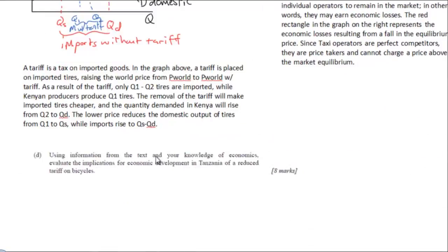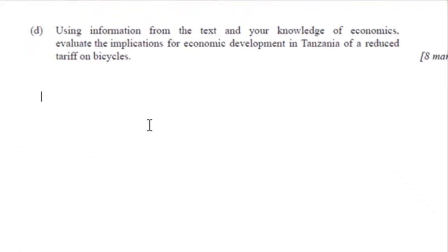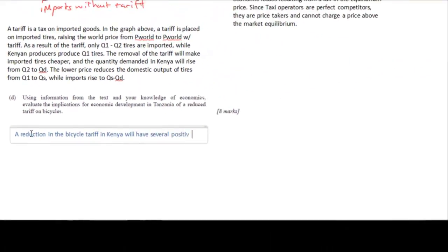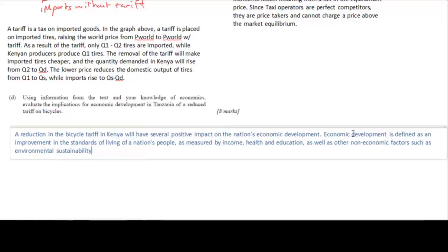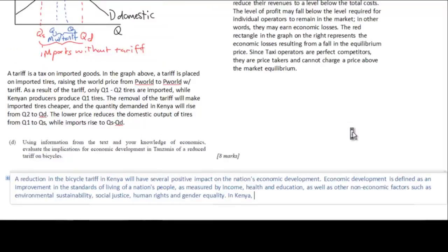Alright, let's move on to question D. Question D is always the most difficult and time consuming component of a data response question. And one of the best pieces of advice I could give is to start with a clear topic sentence, which you will then go about proving using evidence from the text and your knowledge of economics throughout the rest of your response. So here I make a clear statement at the beginning that the removal of the tariff on bicycles will have positive effects for the nation's development.